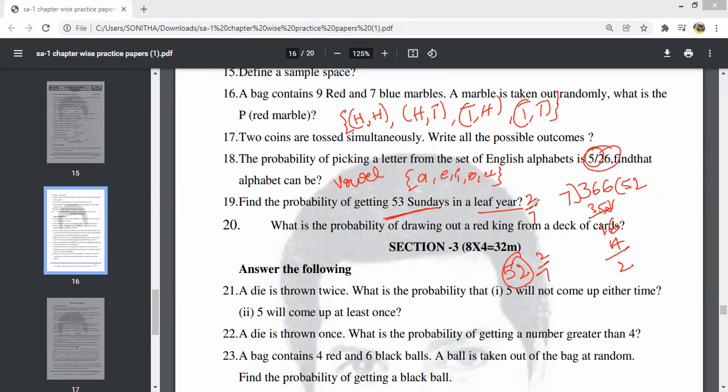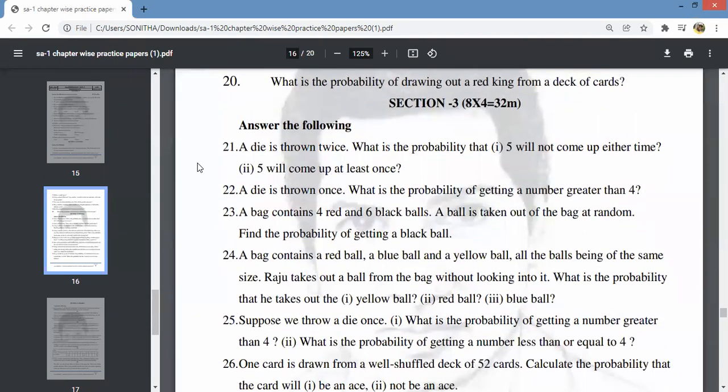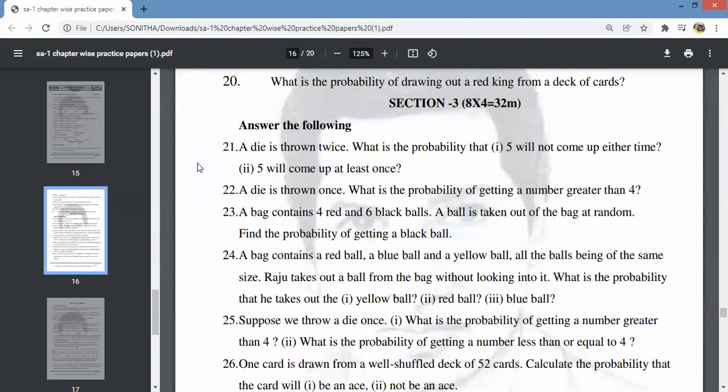Find the probability of drawing a red king from the deck of cards. There are 2 red kings out of 52 cards, so 1 by 26 is the answer. Questions 13 to 20 are complete.